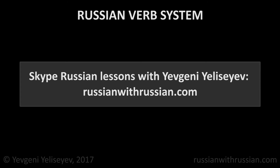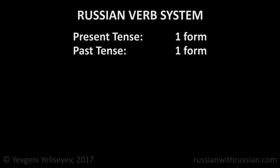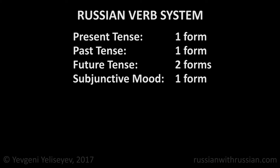One of the features of the Russian verb system is that Russian verbs don't have as many verb tenses as English verbs. We have only one form of the present tense, one form of the past tense, only two forms of the future tense, and one form of the subjunctive mood.